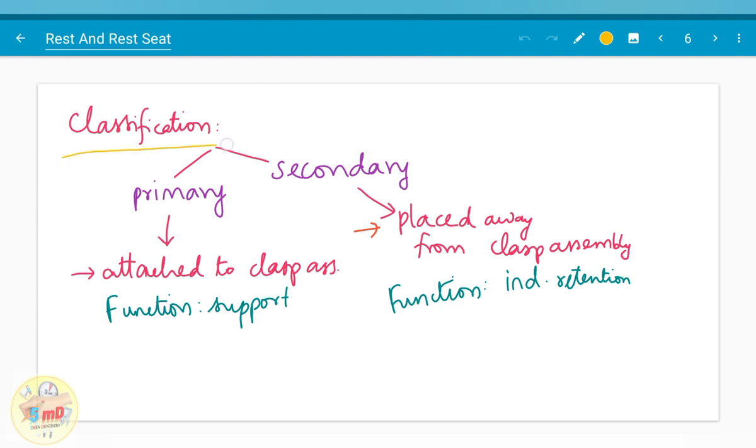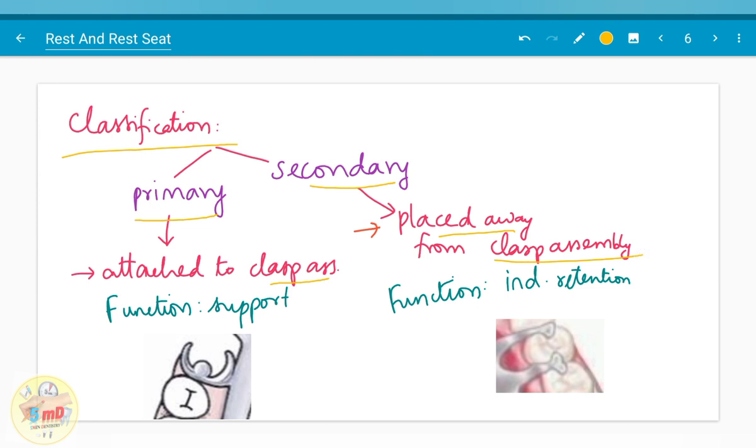The classification of the rests can be either primary or secondary depending on the position. If it is attached to clasp assembly, it is primary rest. If it is placed away from the clasp assembly, it is secondary rest. The main function of primary rest is support. The main function of secondary rest is indirect retention.